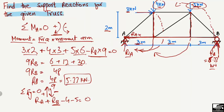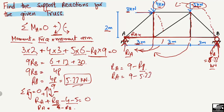We know that RB is equal to 5.33 kilonewtons. Substituting this value, RA equals 9 minus RB, so RA equals 9 minus 5.33, which gives RA equal to 3.66 kilonewtons. So the vertical reaction at A is 3.66 kilonewtons.